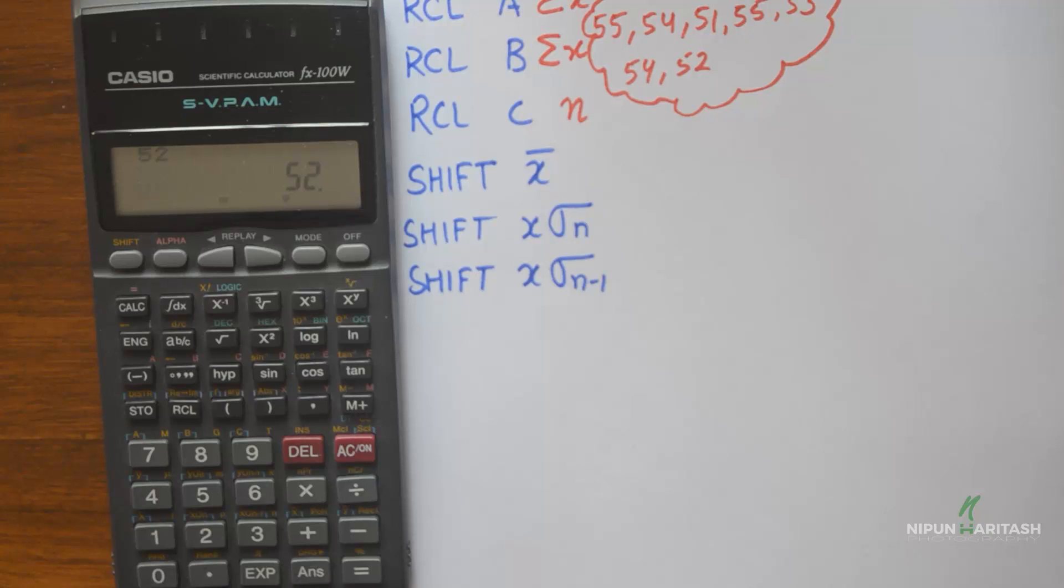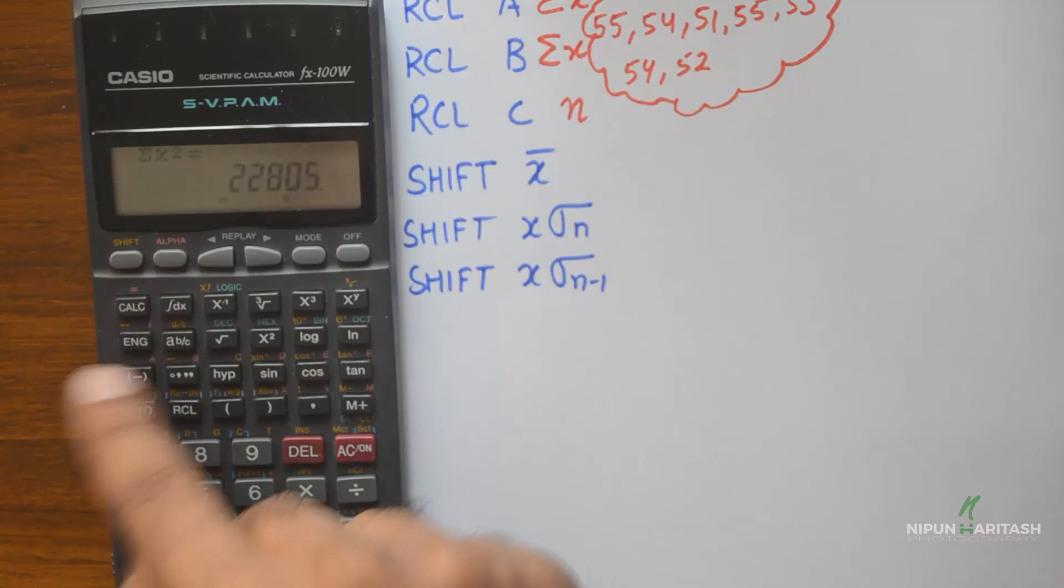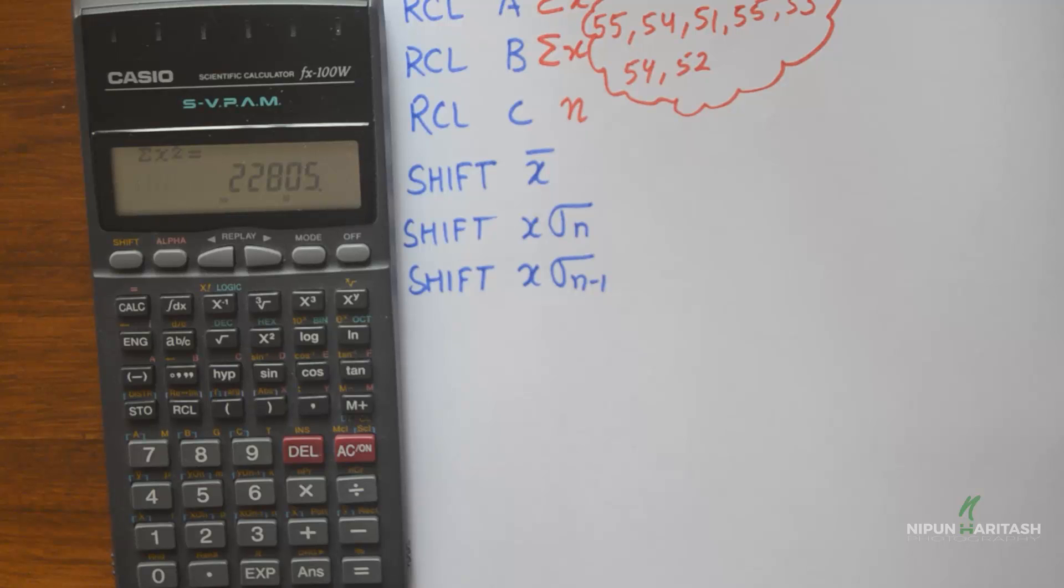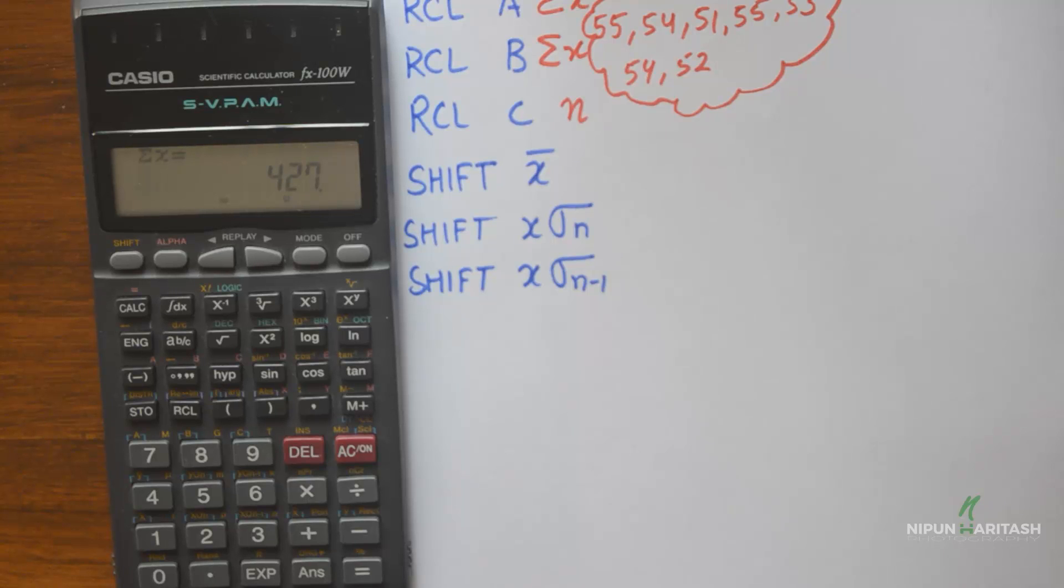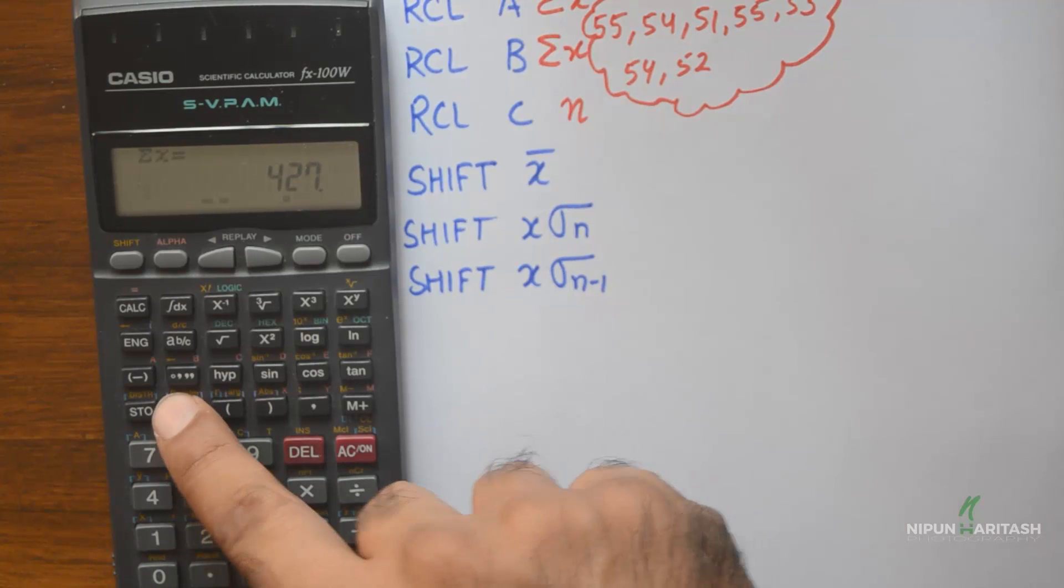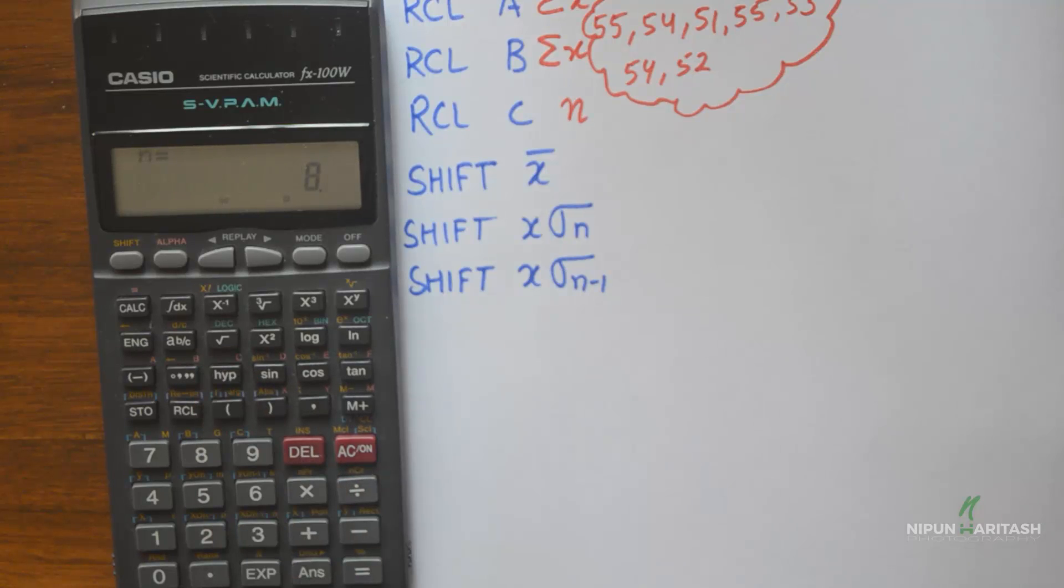Now we need to use the recall button along with the alphabets A, B, and C to find out the desired function. For example, to find summation of squares of values, we do recall and A, so it is 22,805. Then we do recall of B, which is summation of x: 427. Then we do recall and C to find out how many variables were there. We had 8 values in the data set.